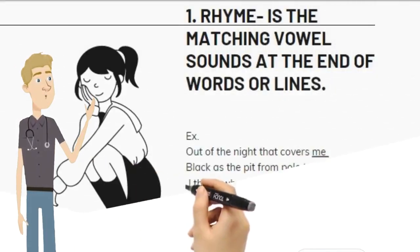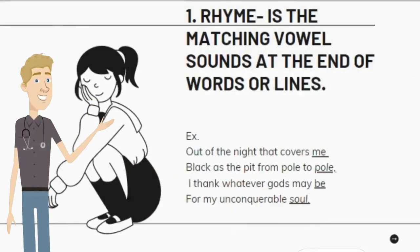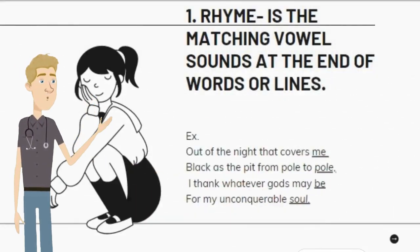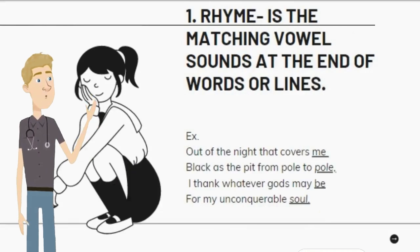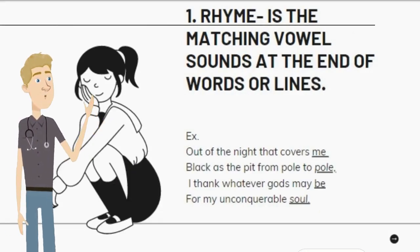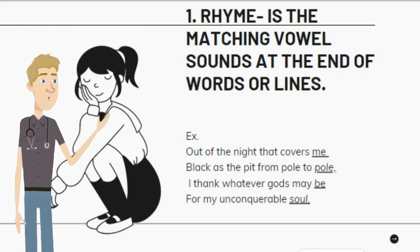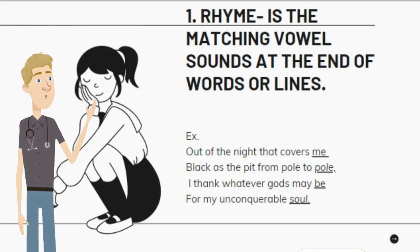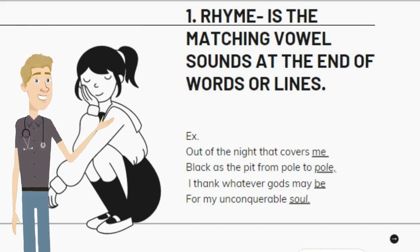1. Rhyme — the matching vowel sounds at the end of words or lines. Example: Out of the night that covers me, black as the pit from pole to pole, I thank whatever gods may be for my unconquerable soul.